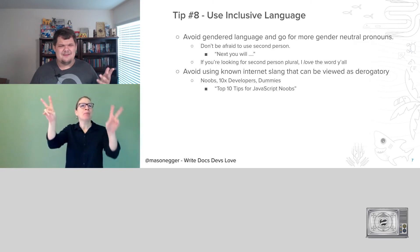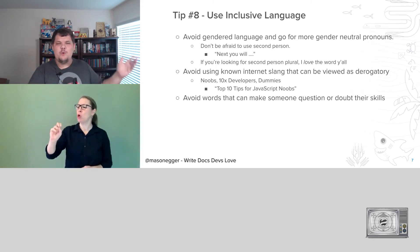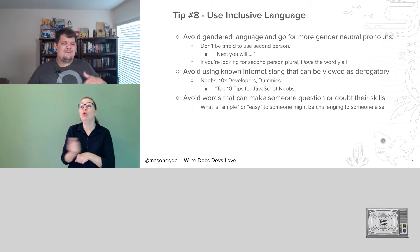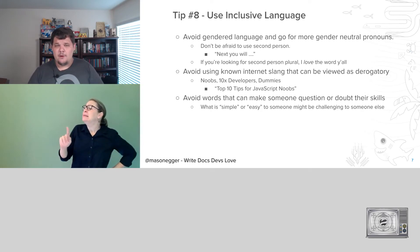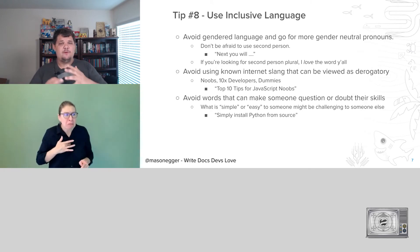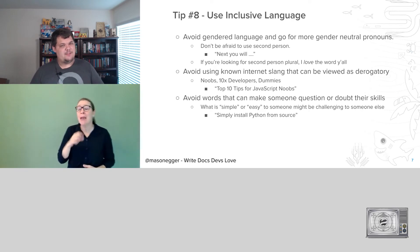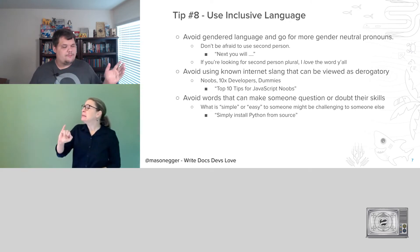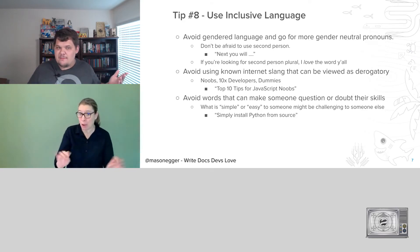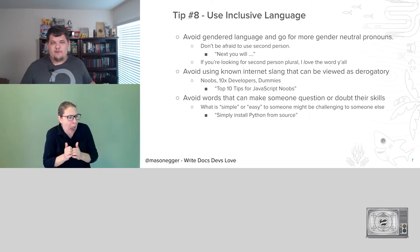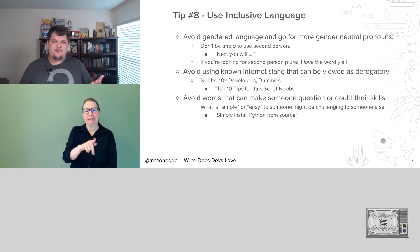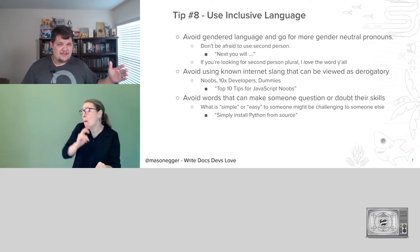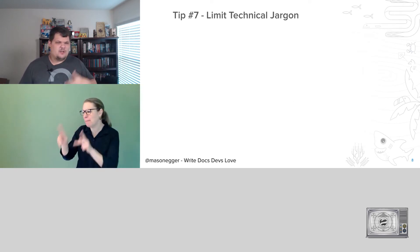Avoid words that can make someone question or doubt their skills. Don't say words like 'simple' or 'easily.' What you consider simple could be considered challenging to someone else. If you say 'simply do this' on a task someone doesn't understand, it makes them feel lesser — maybe they think 'maybe I shouldn't be doing this tutorial, maybe this isn't for me.' Saying 'simply install Python from source' — there's nothing simple about that for someone who's never done it. The word 'simply' adds nothing to that statement whatsoever. It just makes someone feel a little bit lesser. It's a useless word — don't add it.